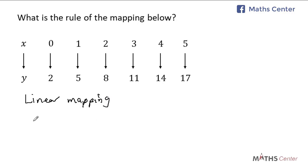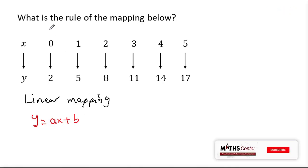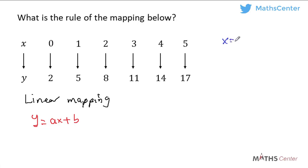The rule of a linear mapping is of the form y is equal to ax plus b, where a and b are constants. We can pick any two pairs of x and y values to find a and b. Let's start with the first pair: when x is equal to 0, y is equal to 2. Substituting into y is equal to ax plus b gives us 2 is equal to a times 0 plus b.